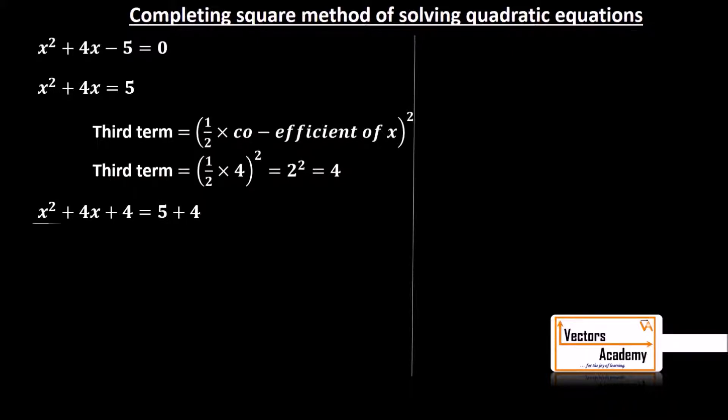Now if you look carefully at the left hand side of this equation, the first three terms x² + 4x + 4 is a whole square of some bracket. Now how do you find that? What we do is, we take the square root of x², which is x.